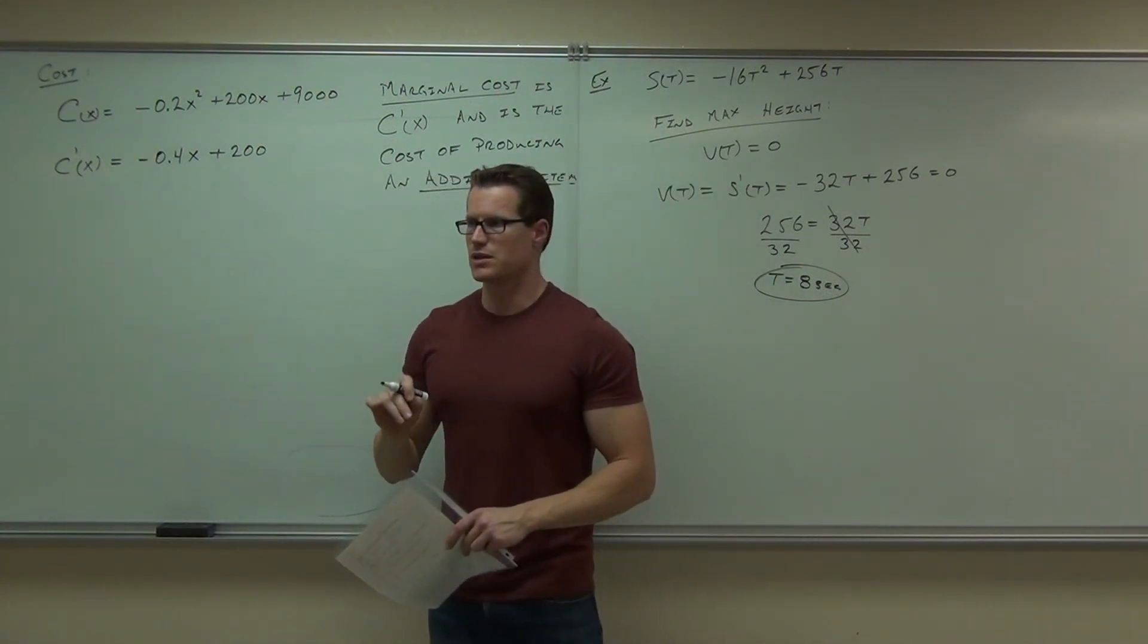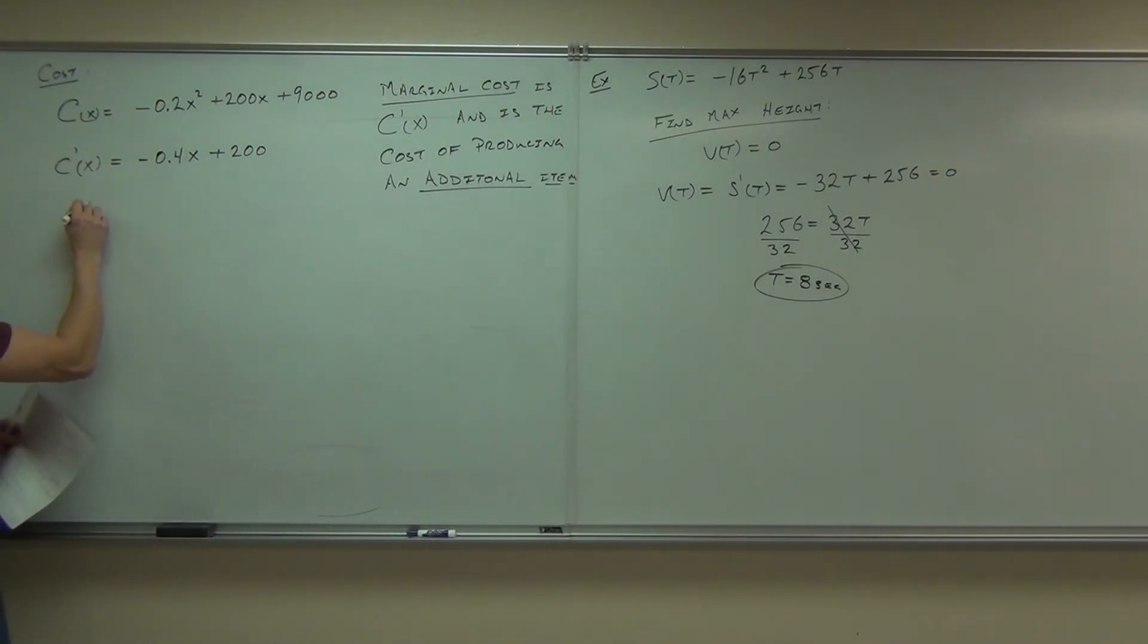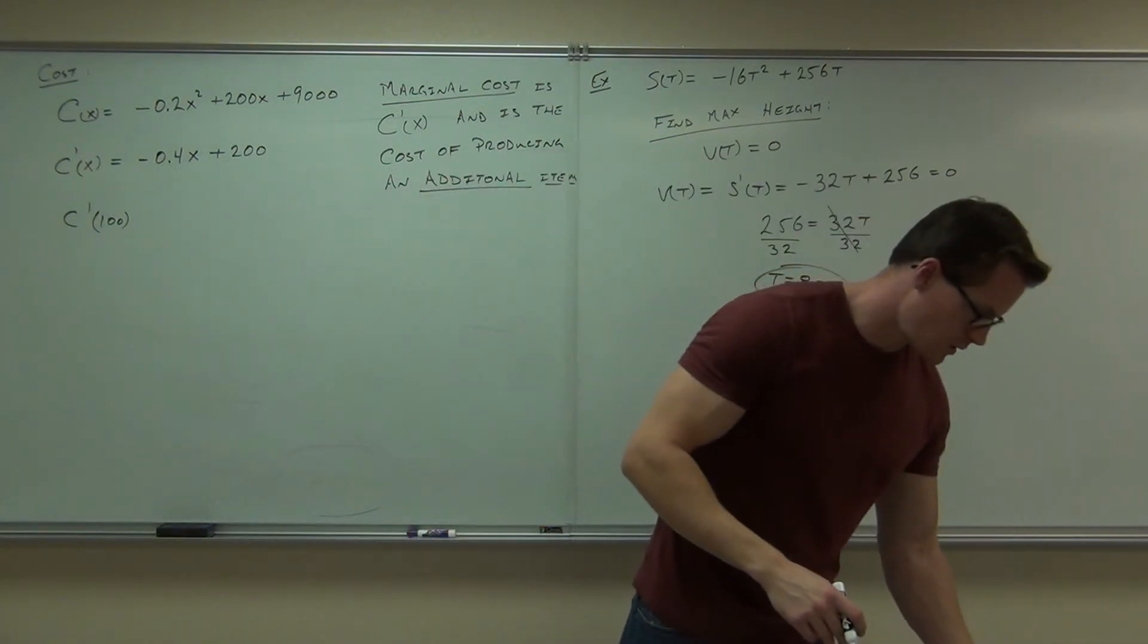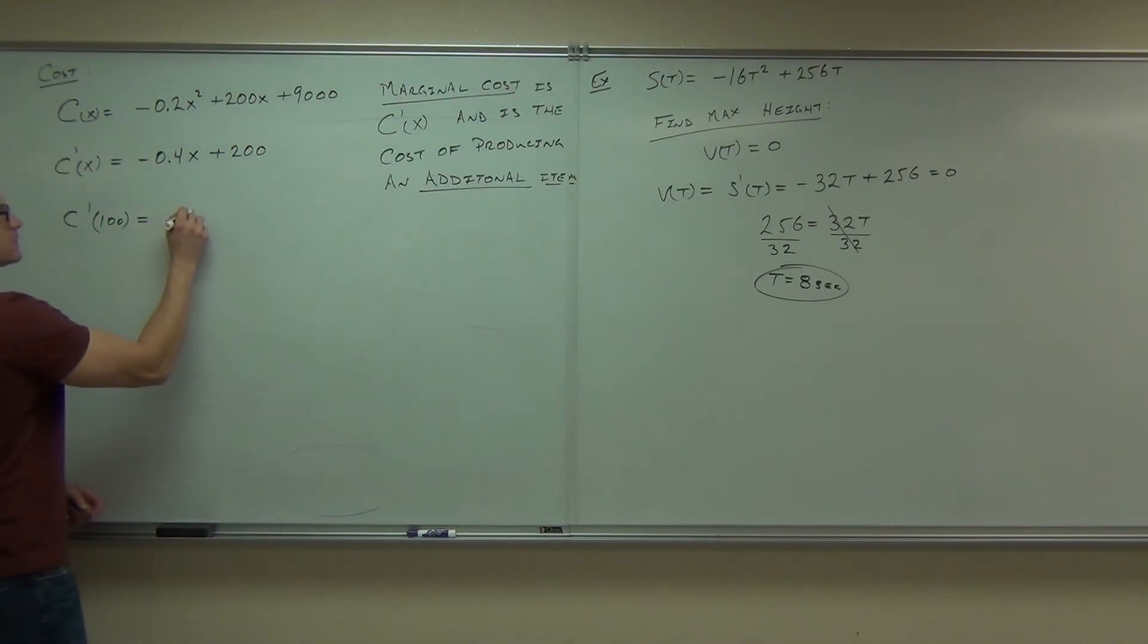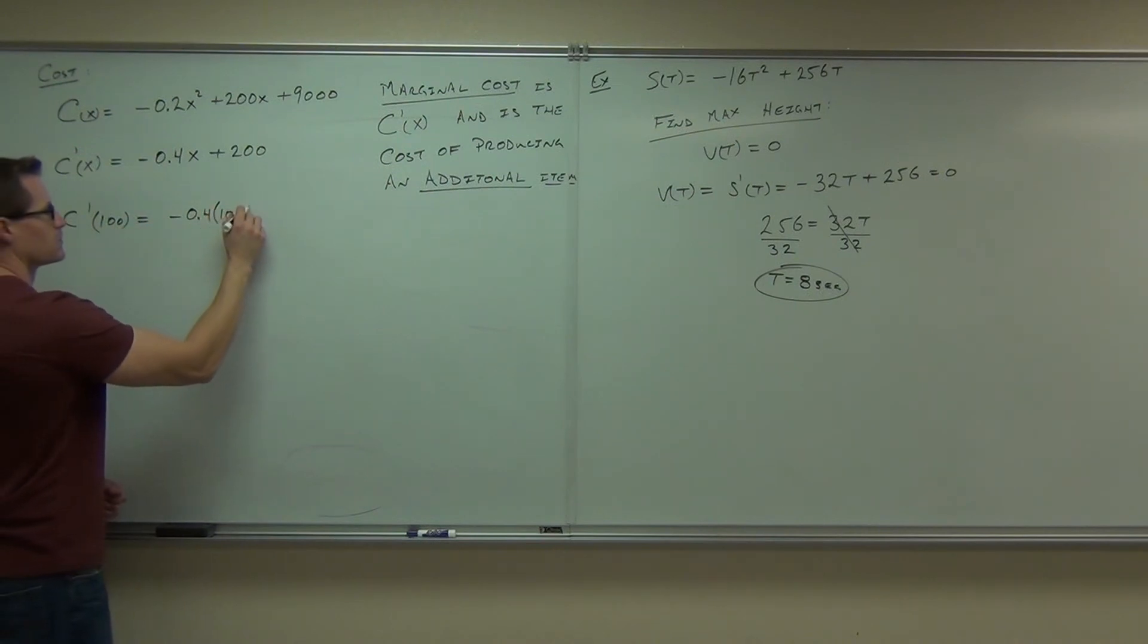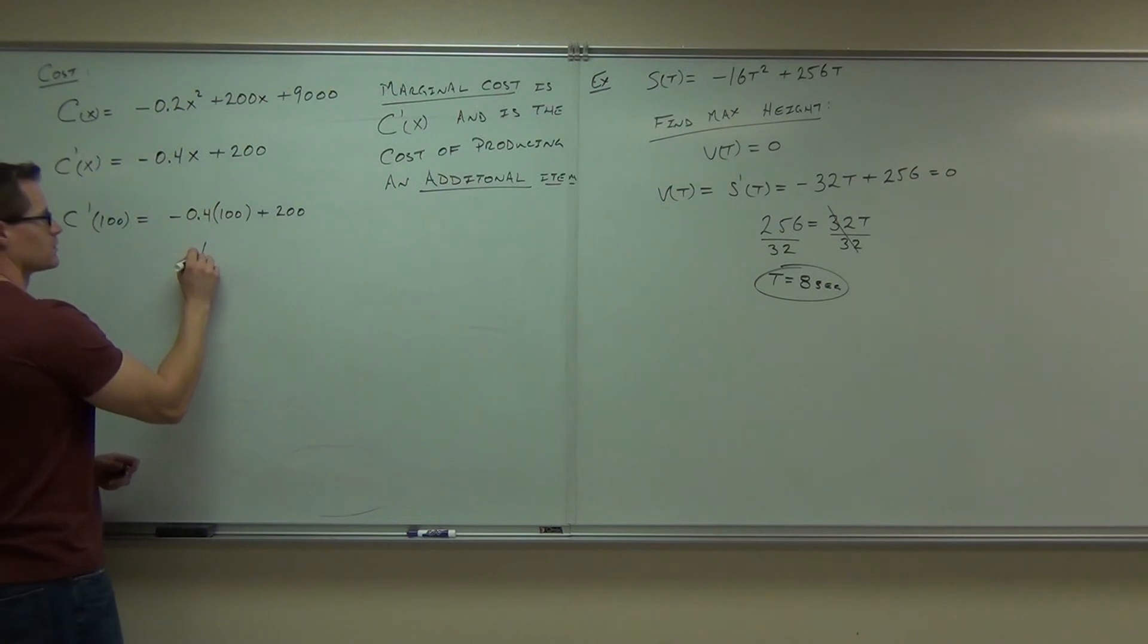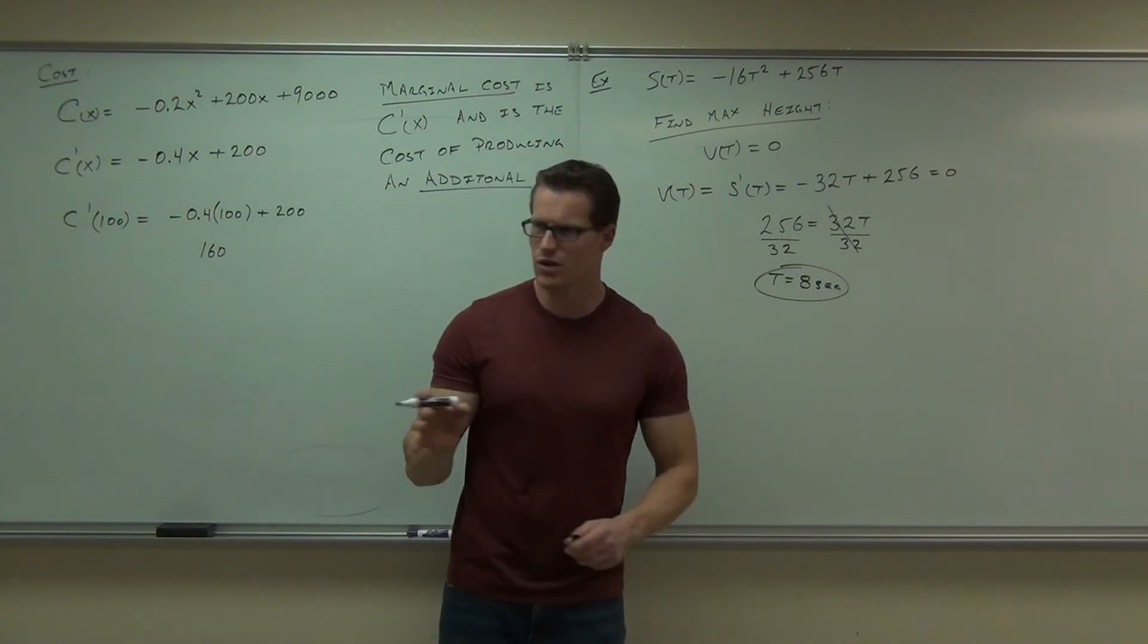Could you find out the cost of producing the 100th item? That would be C prime of 100. What's your cost at the 100th item? 160. What was it? 160. Whatever we're talking in, thousands of dollars, dollars, whatever it is, it's 160. Do you all get 160? Do 101 for me.